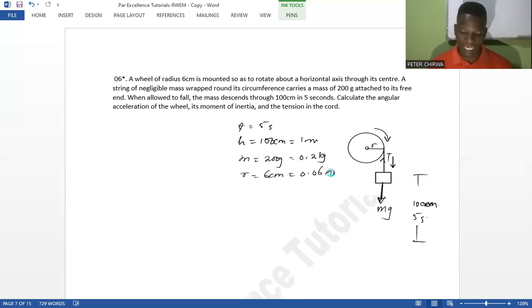What do we know? Let's start with what we know. From the data we've been given, we can find the acceleration. How do we do it? For angular acceleration, we know that height is given by h = ut + ½at².